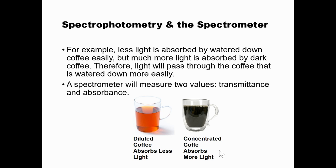For example, less light is absorbed by watered down coffee, so it doesn't absorb as much light. Much more light is absorbed by dark coffee; therefore, light will pass through watered down coffee more easily. A spectrometer will measure two values: transmittance—how much transmits through—and absorbance—how much is absorbed.